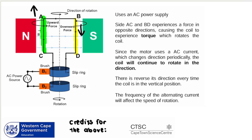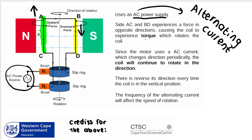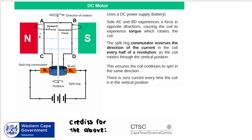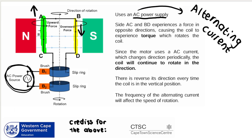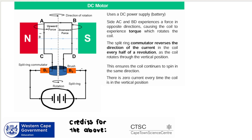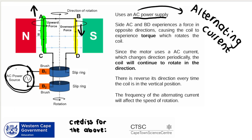This is an AC motor, which makes use of AC — alternating current — meaning the motor changes direction periodically. There's a reversal in its direction every time the coil is in the vertical position. On the other hand, a DC motor uses a DC power supply — a battery. Most of the time we'll show one with a battery, so a DC motor. AC and BD experiencing forces in opposite directions causes the coil to experience a torque — a turning force — which rotates the coil. In a DC motor, this component is called a split ring commutator, whereas an AC motor uses slip rings.